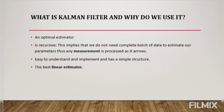The Kalman filter is an optimal estimator which minimizes the mean square error of the parameter being estimated if the noise is Gaussian. Optimal estimator means that if the noise has a Gaussian probability density function (PDF), it minimizes the mean square error in an optimal sense. It is also recursive, meaning we do not need a complete batch of data to estimate our parameter — any measurement is processed as it arrives. It is easy to understand, implement, and has a very simple structure.